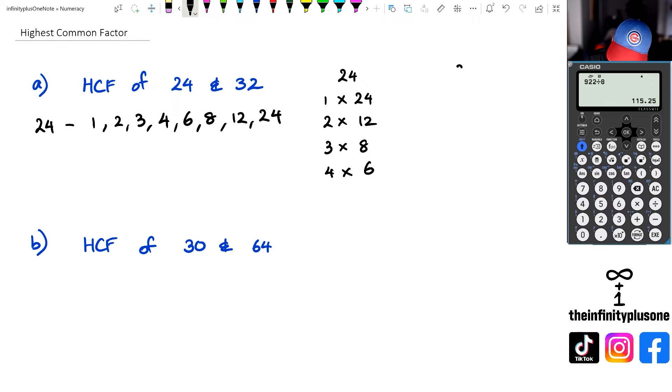Next I want to write down all the factors of 32. So I've got 1 times 32. I've got 2 times 16. 3 really doesn't work. So I've got 4 times 8. I think that's pretty much it. So with that in mind I'm going to write down 32 and I'm going to write down all my factors of 32. So that's going to be 1, 2, 4, 8, 16 and 32.